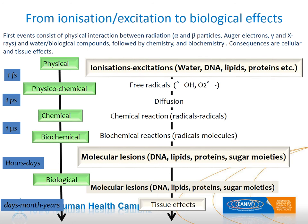When we have a closer look at the biological effects of irradiation, the first events consist of physical interactions between radiation and water as well as biological compounds, followed by chemical and biochemical reactions. This may finally cause molecular lesions in DNA, lipids, proteins, etc., ending up in tissue effects. The first steps usually take parts of seconds; however, the overall tissue effects will take days up to months and can sometimes be observed after years.